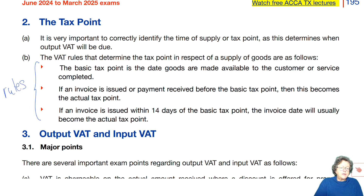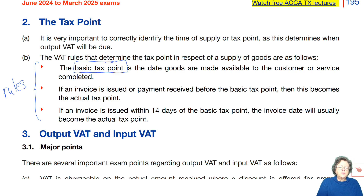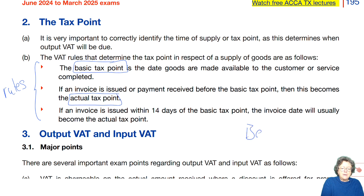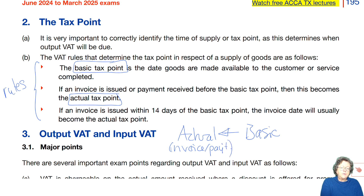The VAT rules that determine the tax point in respect of the supply of goods are as follows. The basic tax point is the date the goods were available to the customer or services were completed. However, if an invoice is issued or payment is received before that date, that becomes what's known as the actual tax point. It may become actual if an invoice is issued or payment is received before the goods are made available.